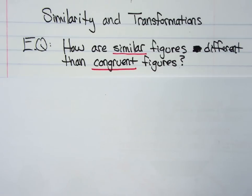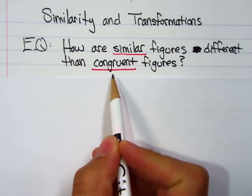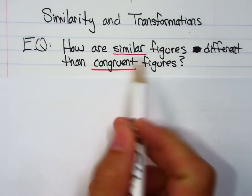All right, so we're coming to the end of the year, and we're learning about similarity and transformation. So the central question, how are similar figures different than congruent figures? So congruent, you've already learned about, same sign, same shape, and similar is what you're going to learn about today.